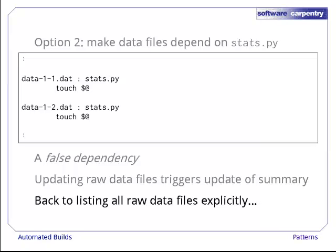False dependencies do solve some problems, but not this one. If we go down this road, we have to list all our raw data files explicitly once again, which is what we're trying to avoid.